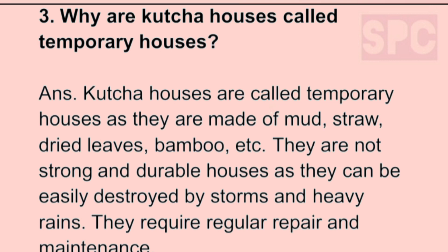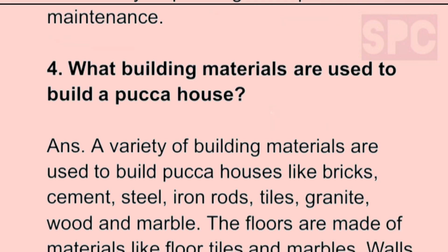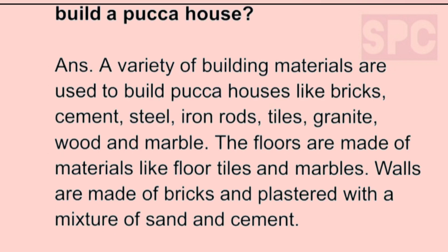Question 3: Why are kaccha houses called temporary houses? Answer: kaccha houses are called temporary houses as they are made of mud, straw, dried leaves, bamboo, etc. They are not strong and durable and can be easily destroyed by storms and heavy rains, and they require regular repair and maintenance. Question 4: What building materials are used to build a pakka house? Answer: a variety of building materials are used like bricks, cement, steel, iron rods, tiles, granite, wood, and marble. Floors are made of floor tiles and marble; walls are made of bricks plastered with a mixture of sand and cement.